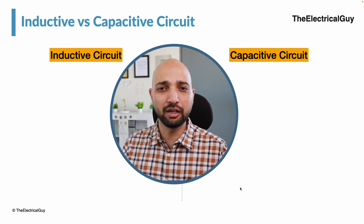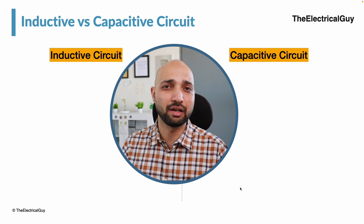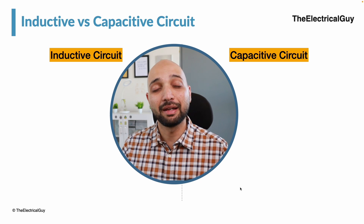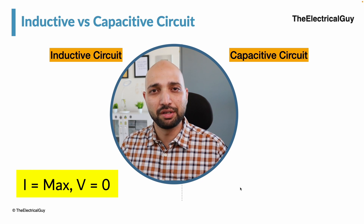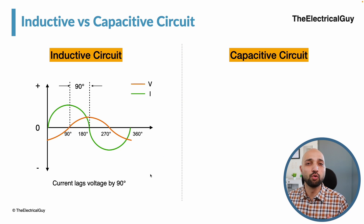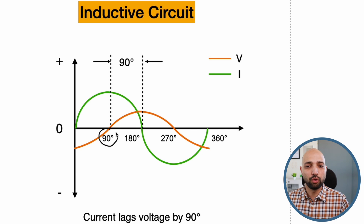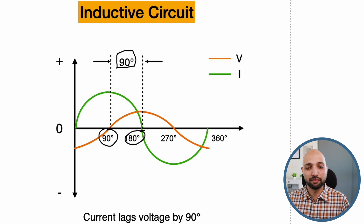The second difference: an inductor opposes the change in current. When passing alternating current, the inductor opposes it, so when current is maximum the voltage is zero, and when current is zero the voltage is maximum. Looking at the waveform, voltage has a head start and current lags behind. For example, if voltage reaches zero at 90 degrees, current reaches zero at 180 degrees — a difference of 90 degrees.